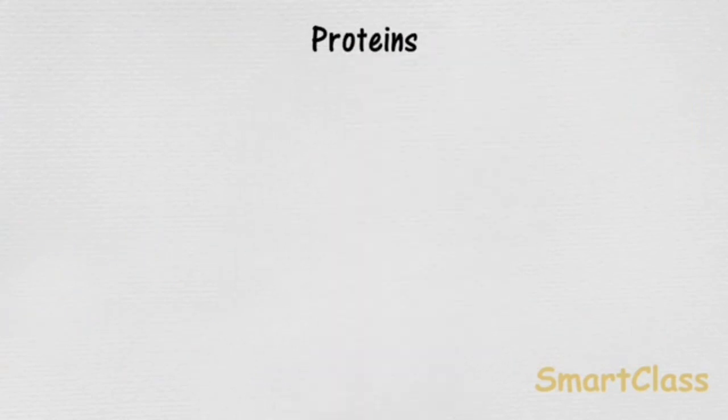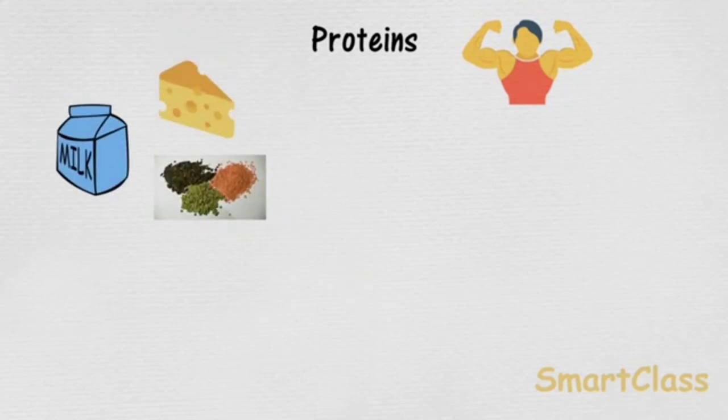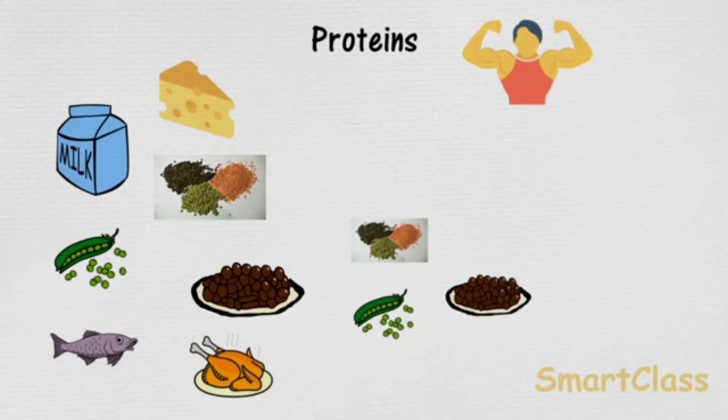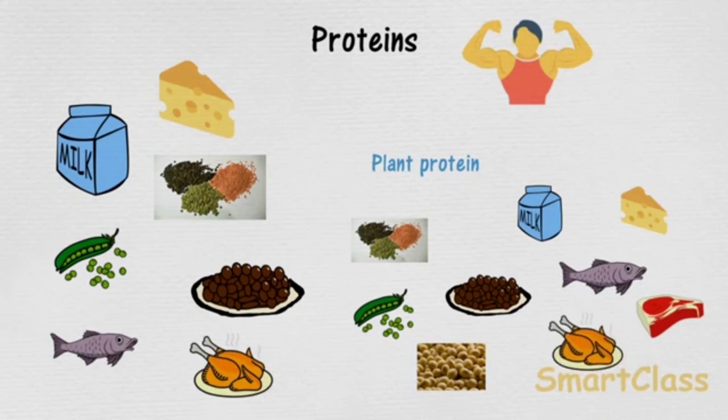Next, proteins. Proteins are also known as body-building foods and are essential for the proper growth of the body. Proteins also help to repair damaged cells present in our body. Food items such as milk, butter, cheese, beans, fish, and meat are rich in proteins, so we have to include all these food items in our diet.